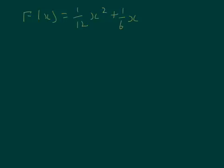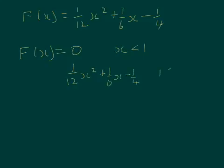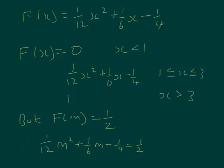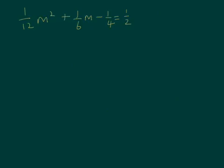So F of x is 1/12 x squared plus 1/6 x minus 1/4. We know it's 0 when x is less than 1, it's 1/12 x squared plus 1/6 x minus 1/4 when x is between 1 and 3, and it's 1 when x is greater than 3. To find the median we solve F of m equals a half, substituting x with m, giving 1/12 m squared plus 1/6 m minus 1/4 equals 1/2, which rearranges to 1/12 m squared plus 1/6 m minus 3/4 equals 0.